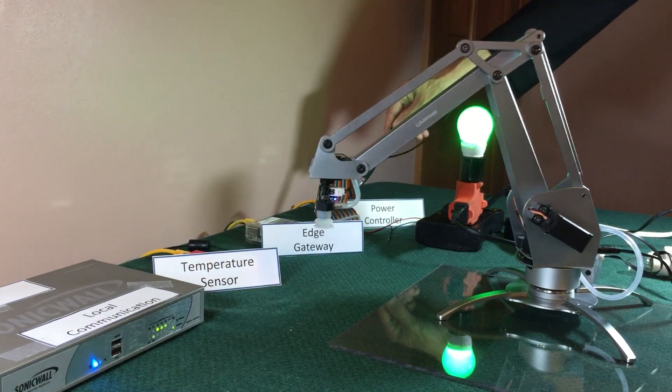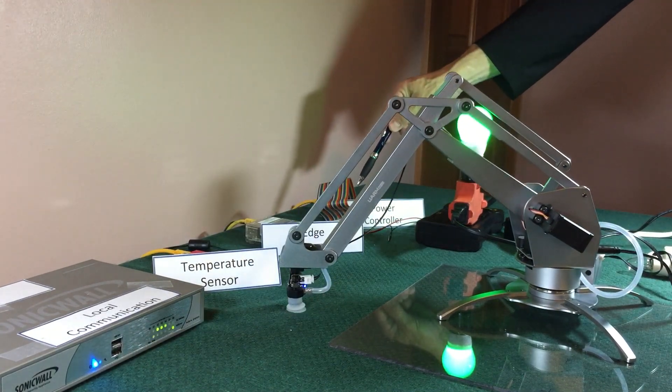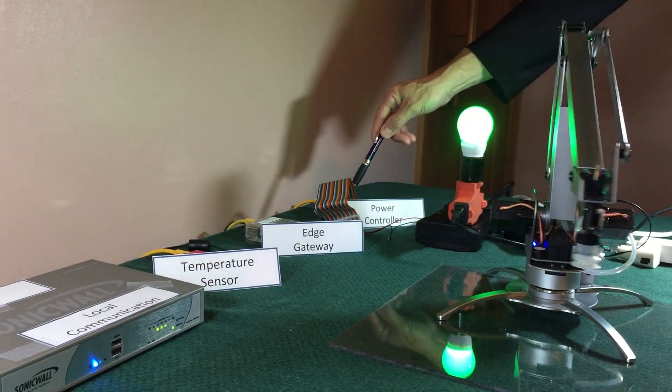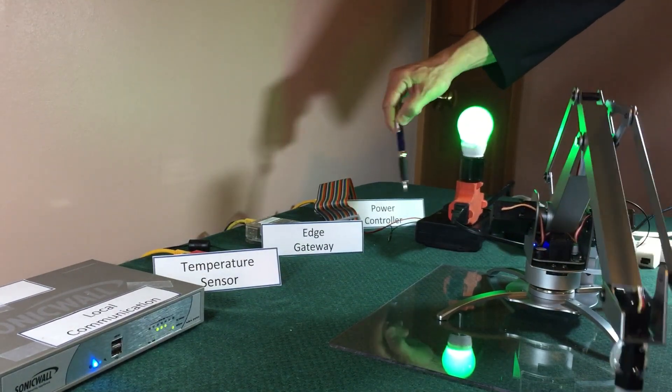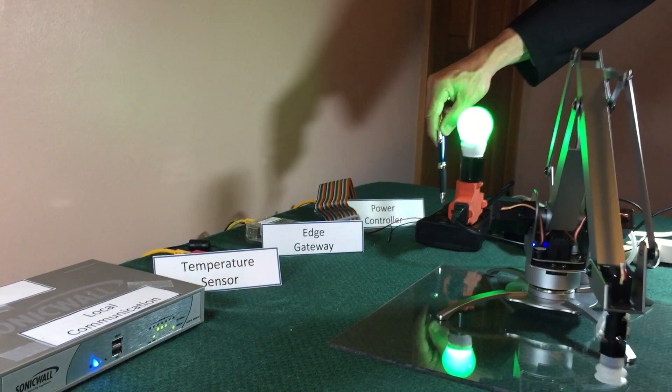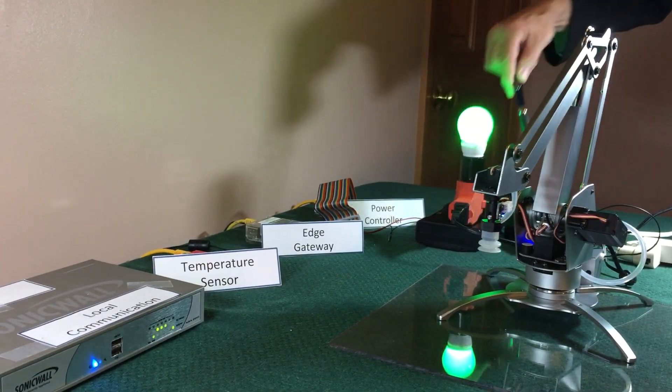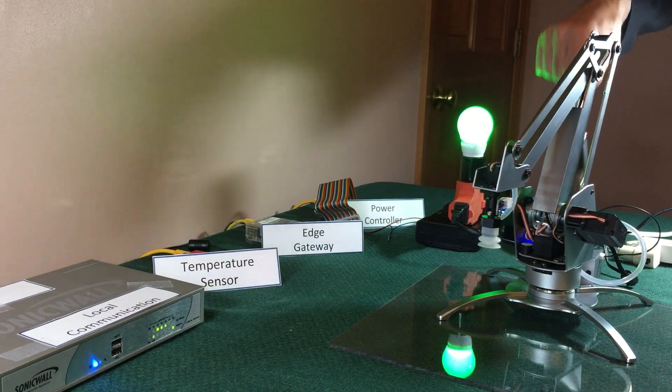I have written a rule that if the temperature exceeds 38 degrees Celsius, then this will trigger pin 17 high, which will toggle the power control on this power control device, which will then turn off the power to the robot.